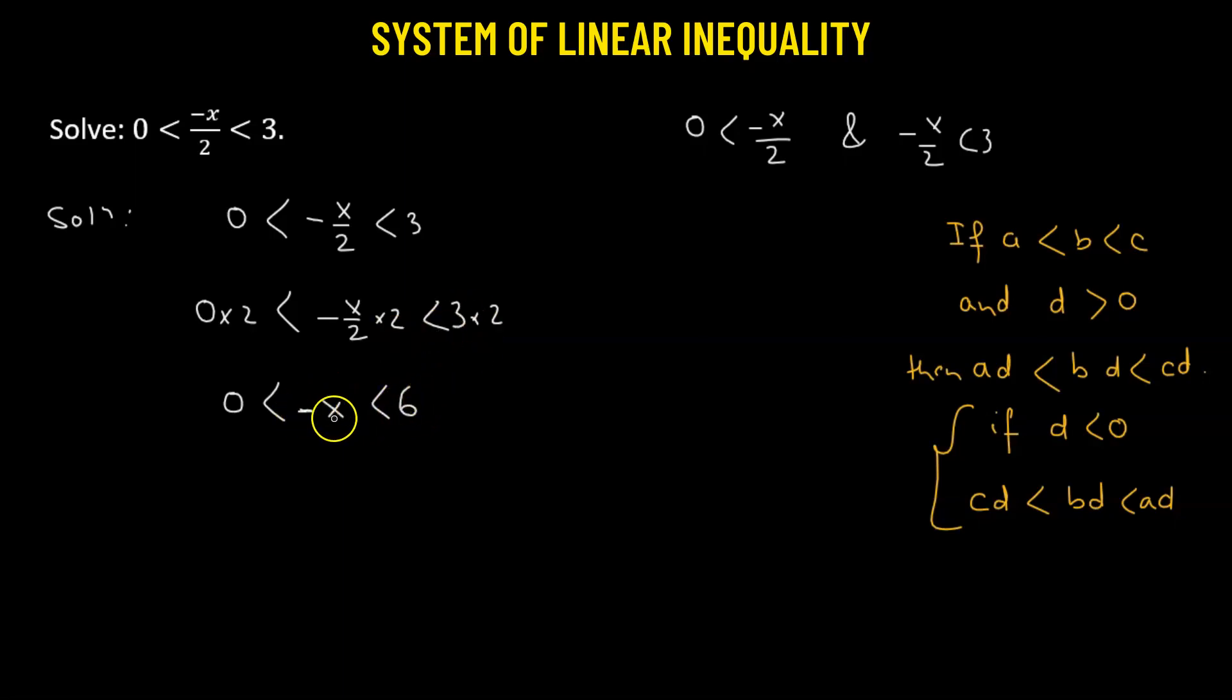Now we want to make the coefficient of x, which is negative, positive. To do that, we'll multiply with negative 1. Since negative 1 is less than 0, our equation will become 6 less than x, which rearranges to negative 6 less than x less than 0.